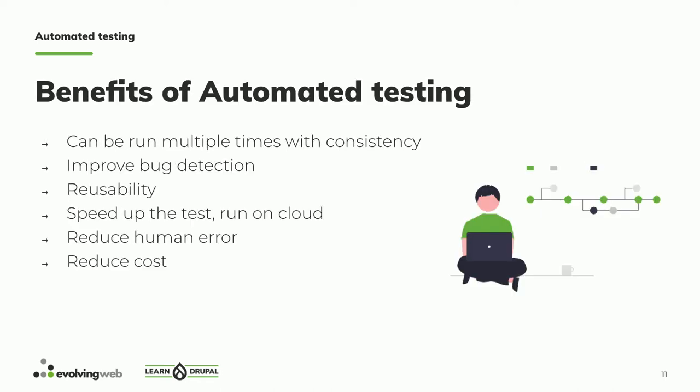The benefits of automated testing: you can run it whenever you want and it's very consistent. It runs on the cloud so you don't need to worry about environment differences. It can improve bug detection. There's also reusability — the test code you write for one website has parts that can be inherited and reused on other sites, especially when you work with Drupal. That will reduce the cost of QA on your system.